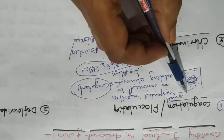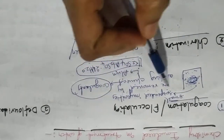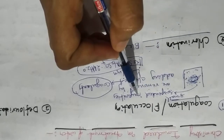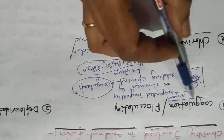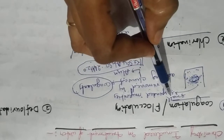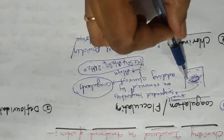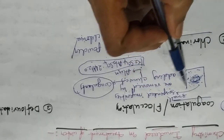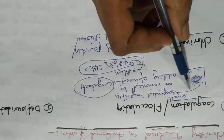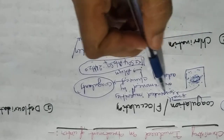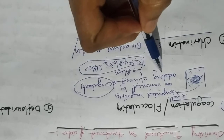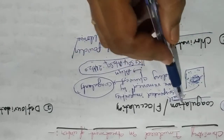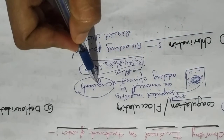First, let us discuss about the coagulation, or flocculation. Coagulation is a process of removal of small suspended impurities present in the water. These small suspended impurities are dispersed in the water and are removed by adding some chemicals, known as coagulants.